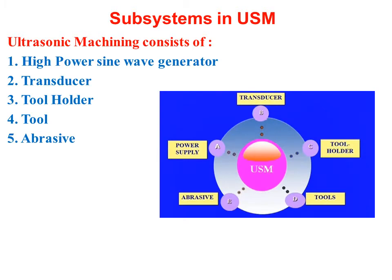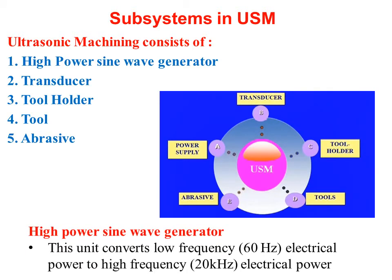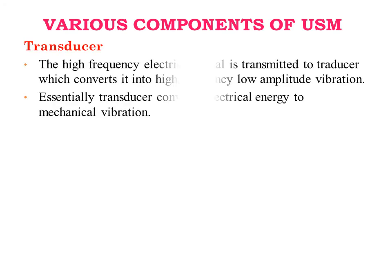The first subsystem is the high power sine wave generator, which converts low frequency electrical power to high frequency electrical power. The high frequency electrical signal is then transmitted to the transducer, which converts it into high frequency, low amplitude vibration. Essentially, the transducer converts electrical energy to mechanical vibration.